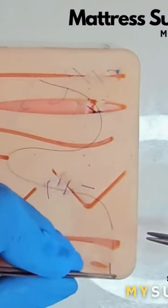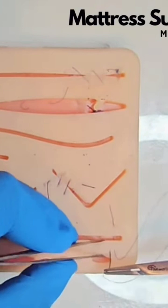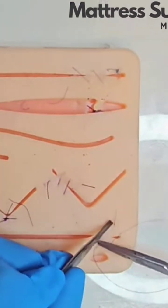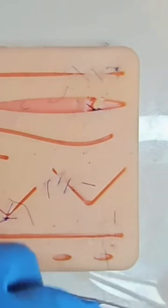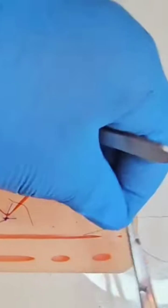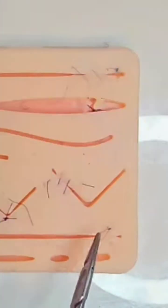The horizontal mattress: you go across the wound like an interrupted, but you take two further bites. The third next to the second, heading back across the wound and exiting opposite and next to the first. You perform your surgeon's knot followed by two reef knots. This is excellent for wound eversion.